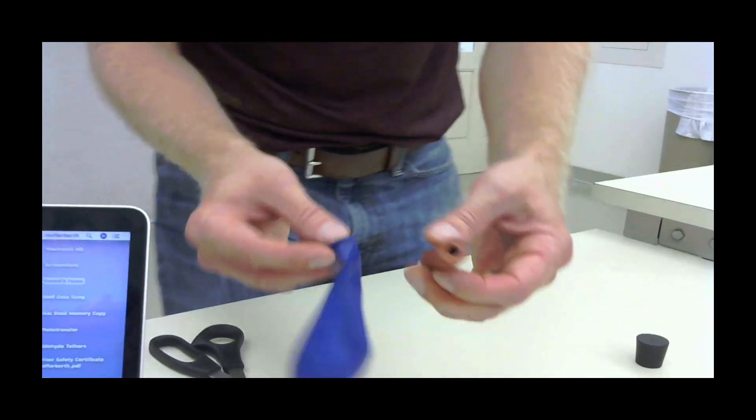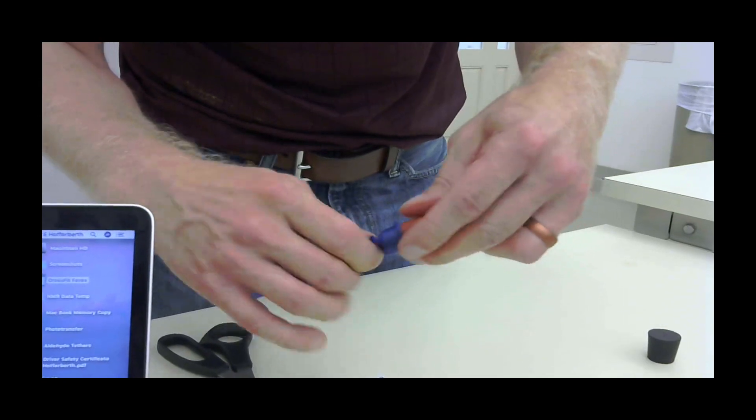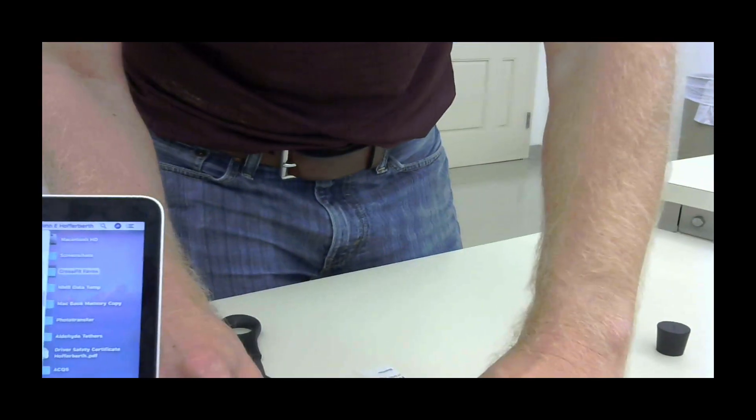The other half involves getting the balloon on there. So in order to make the balloon, you just stretch the end of the balloon around the rubber tubing. Get it kind of even.